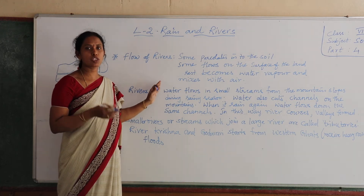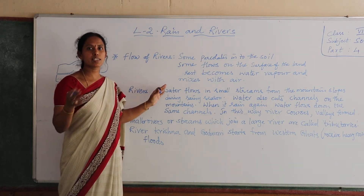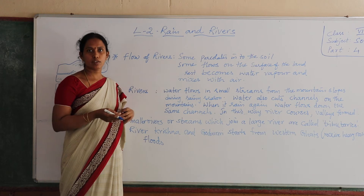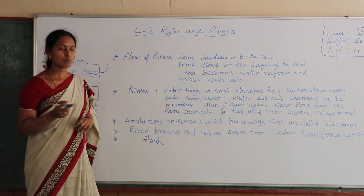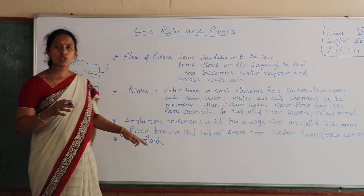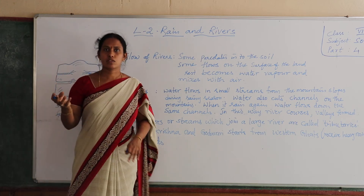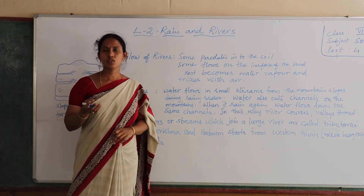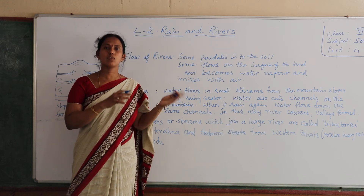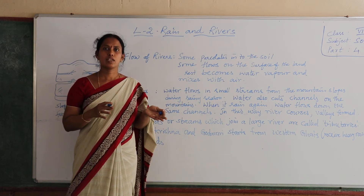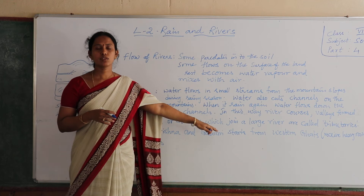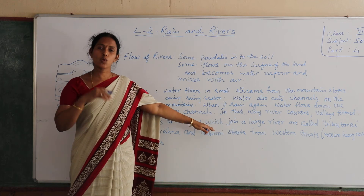These rivers deposit silt and sand on the banks of the rivers, and these deposited areas are called plains. We have so many rivers on this earth. In the rainy season only, some rivers have water, but rivers like Krishna and Godavari have water throughout the year.